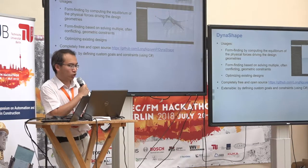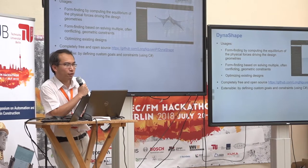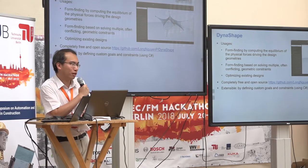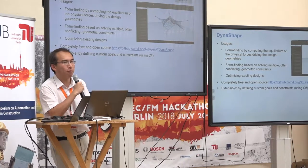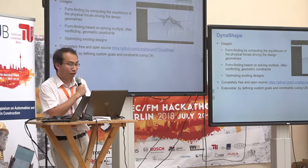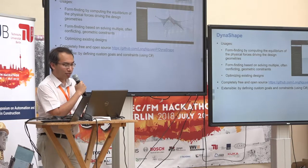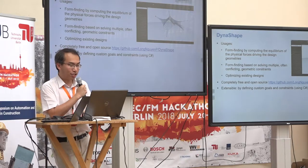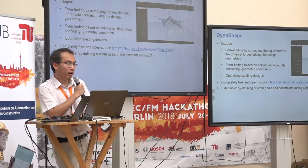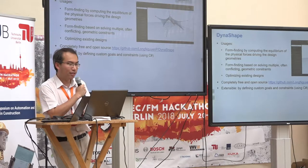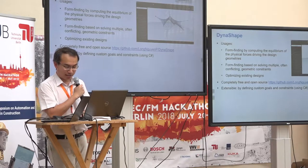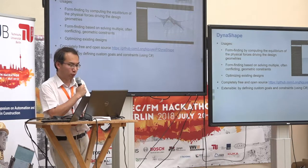The final usage is strength optimization where you already have more or less well-defined geometry and you just want to tweak it a little bit to make everything more sensible, more easy to fabricate or to build. The package is completely free and open source — that is the GitHub repo. It was written entirely in C-sharp and set up so that you can extend it without modifying the core source code. If you want to define a custom constraint that doesn't come with Dynashape, you can do so with C-sharp.